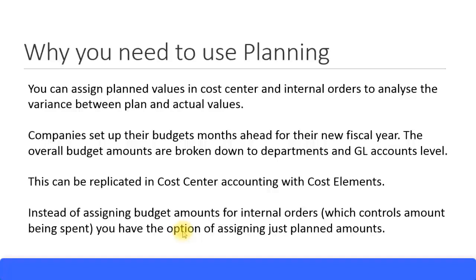We ran some of our cost center reports earlier and saw the actual-plan variance reports, where we only had values in the actual columns. Now in the system, you can also put plan values for cost centers against different cost elements. For example, for a GL account like 50100, which might be an office supplies expense account, you can put a plan value of $12,000 and divide that equally across 12 months at $1,000 each.